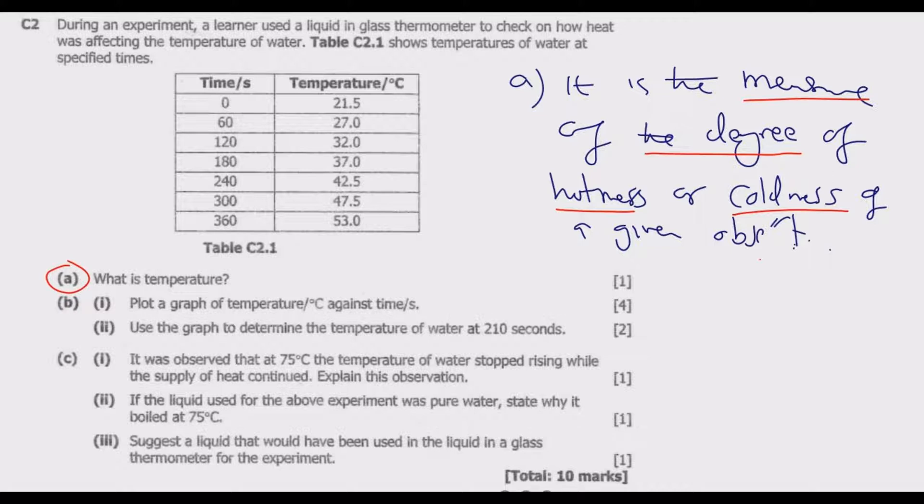Question B(i) says plot a graph of temperature in degrees against time in seconds. Remember the first variable mentioned goes on the y-axis, the vertical axis, then the last one is on the x-axis. Always in physics, the first variable to be mentioned is on the vertical axis, then the last one is on the x-axis.